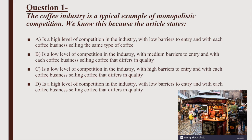Question 1: The coffee industry is a typical example of monopolistic competition. We know this because the article states: A) high level of competition with low barriers to entry and each coffee business selling the same type of coffee; B) low competition, medium barriers, different quality; C) low competition, high barriers, and different quality; or D) high competition, low barriers, and different quality.